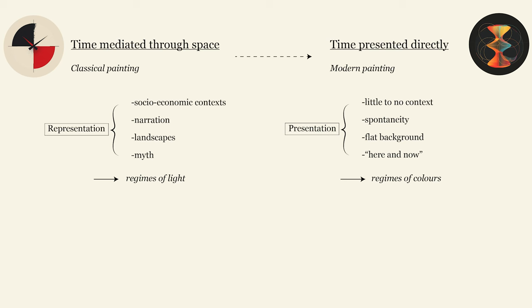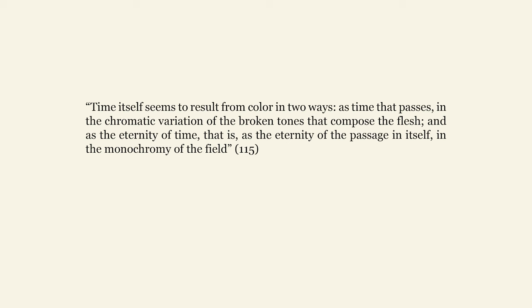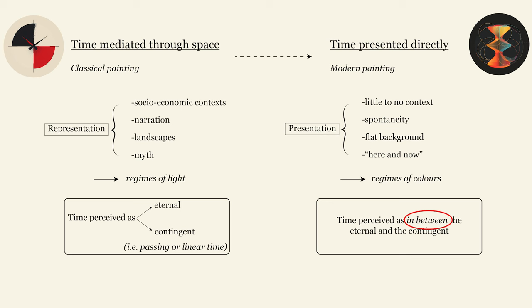These elements for Deleuze are the regimes of colors. In modern painting, regimes of colors convey a new form of time that is neither representative nor about contingency, nor about eternity. As he says, time itself seems to result from color in two ways: as time that passes, in the chromatic variation of the broken tones that compose the flesh; and as the eternity of time — the eternity of the passage in itself — in a monochromy of the field. So in modern painting, time is this in-between of eternity and contingency.